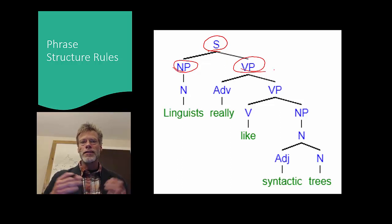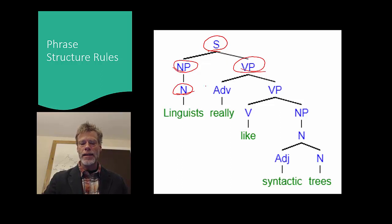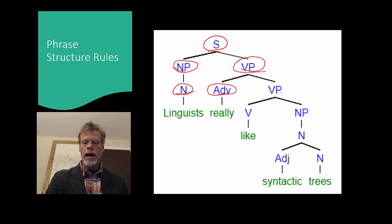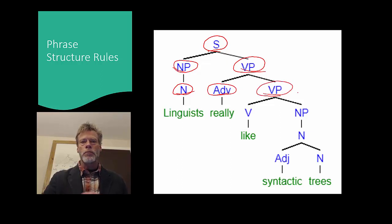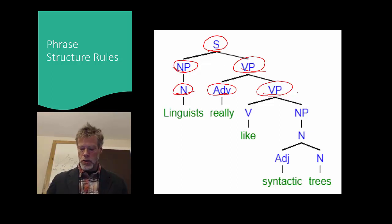They're also mothers of their own nodes. The NP has as its daughter that N, and the VP has as its daughters this adverb and verb phrase. So keep that terminology in mind — we're going to be talking about mothers, daughters, and sisters.